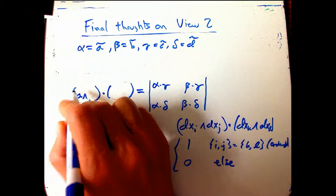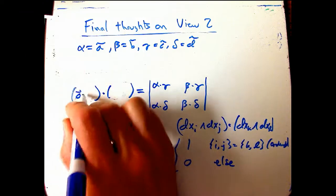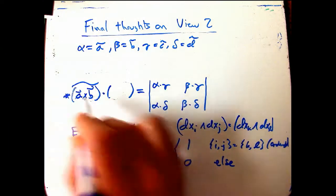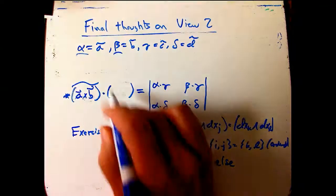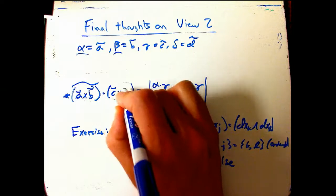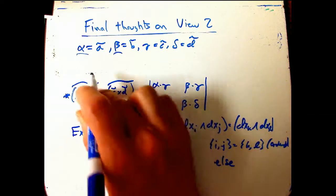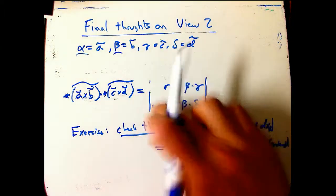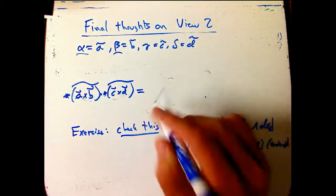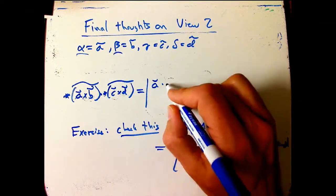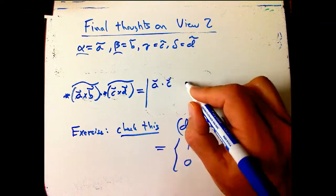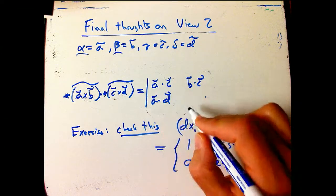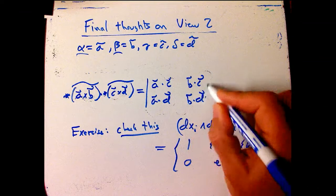We're taking A cross B, and if you turn that into a two form, remember, star tilde, well, that's just exactly alpha wedge beta. And then this guy, C cross D, star tilde, is going to be gamma wedge delta, and then these just all turn into dot products of vectors. This is just A dot C, and then this is B dot C, and this is A dot D, and this is B dot D.